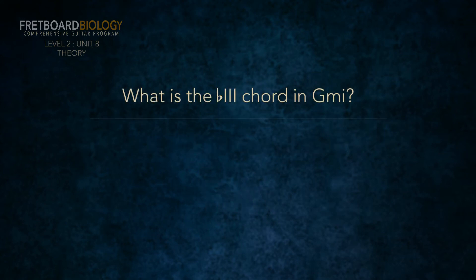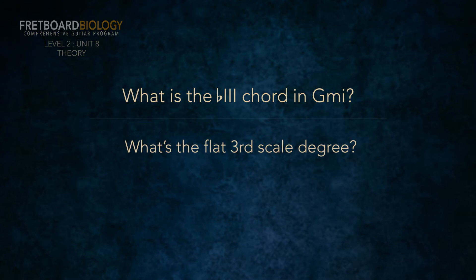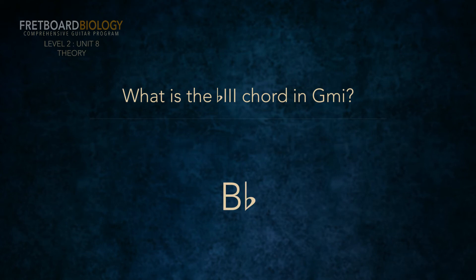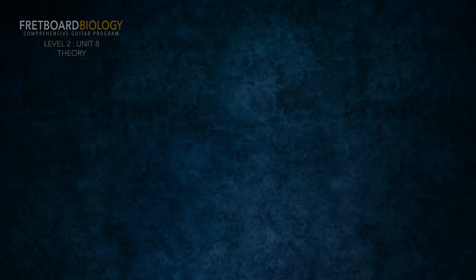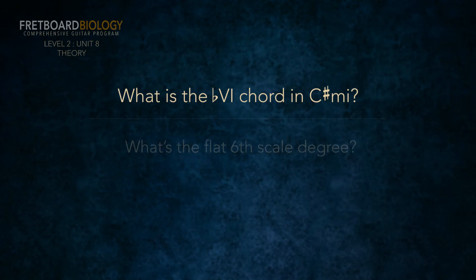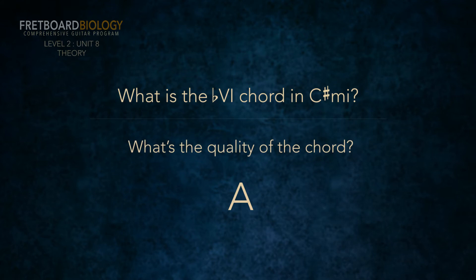What's the flat three chord in G minor? The flat third scale degree in G minor is B flat. The quality built on flat three in all natural minor scales is major. If the flat third scale degree is B flat and the quality is major, the flat three chord in G minor is B flat major. What is the flat six chord in C sharp minor? The flat six scale degree of C sharp minor is A. The quality built on flat six in all natural minor scales is major. So the flat six chord in C sharp minor is A major.